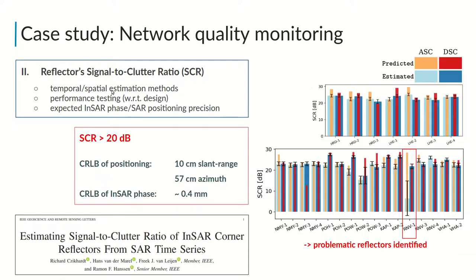For almost all corner reflectors in our network, we achieve average SCR above 20 dB, attaining decimeter-level positioning precision and sub-millimeter InSAR phase variance. We also identify two problematic reflectors under sub-optimal clutter conditions.